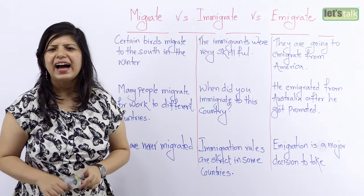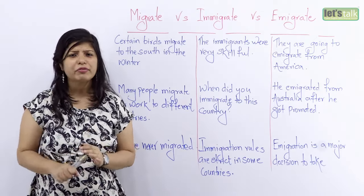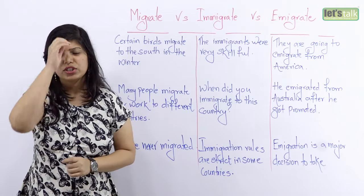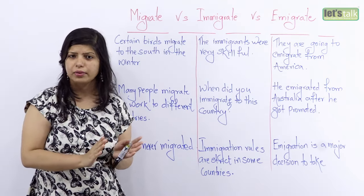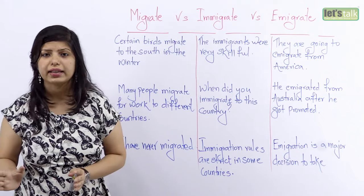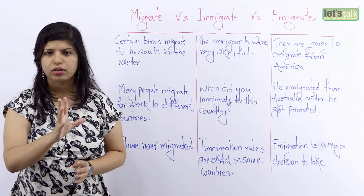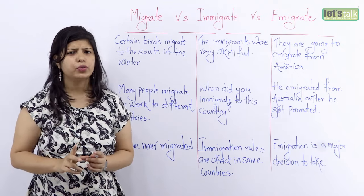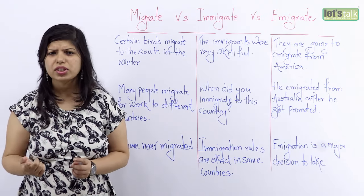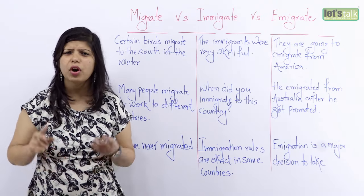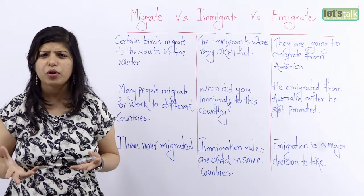Hi there, I have a question for you. You know one of my close friends, she is actually moving from the US to Australia and she is moving permanently, for good. So I'm a little confused here. Is this emigration, immigration or migration? It's very confusing, you know, all of these terms.